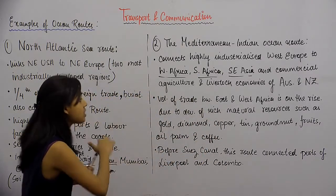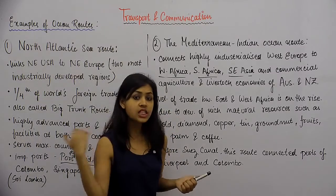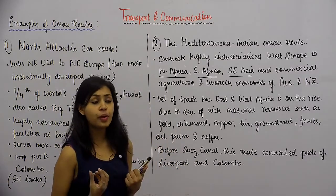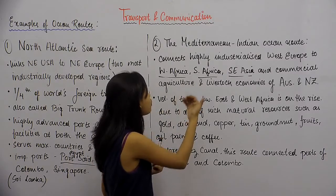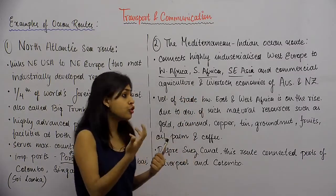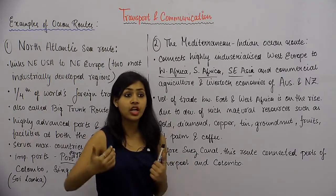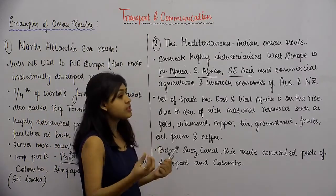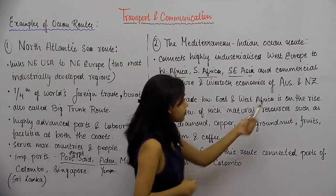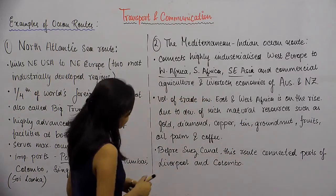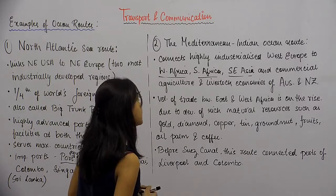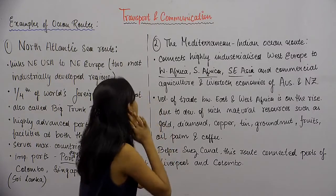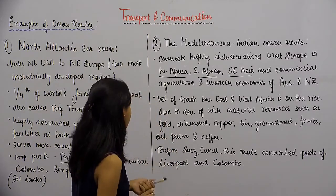This ocean route starts from the Mediterranean area of West Europe, traverses areas near West Africa and South Africa, then crosses the Indian Ocean reaching Southeast Asian countries, Australia, and New Zealand. The volume of trade between East and West Africa is on the rise due to the development of rich natural resources such as gold, diamond, copper, tin, groundnut, fruits, oil, palm, and coffee.